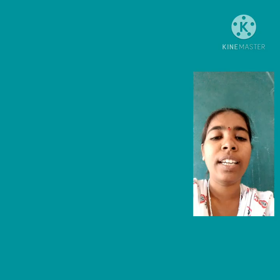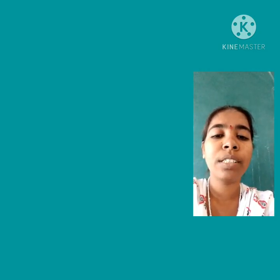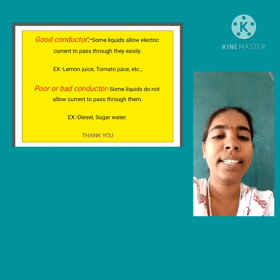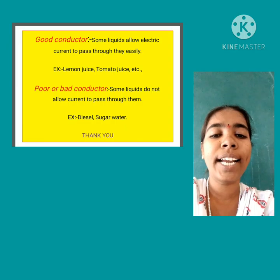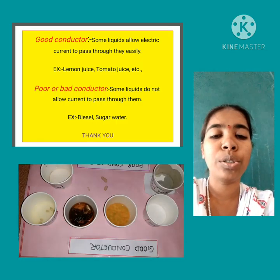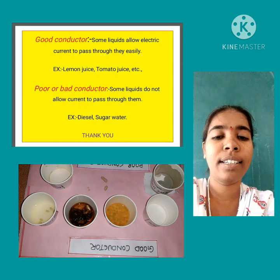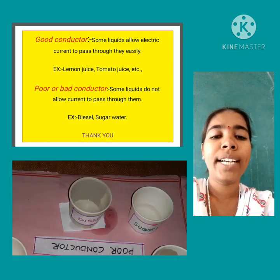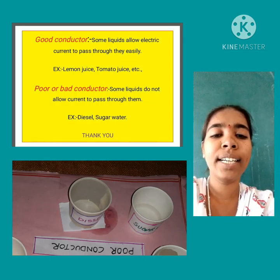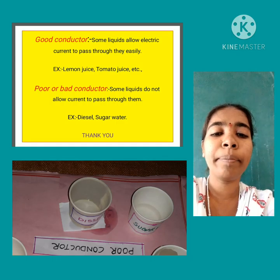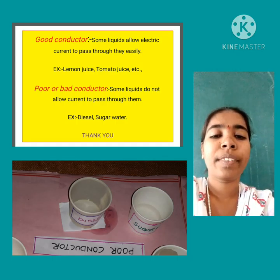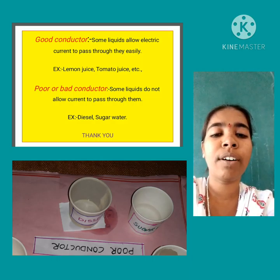From the above activity, we conclude that liquids are of two types: good conductors and bad conductors. Good conductors are liquids that allow electric current to pass through them easily — such as lemon juice, tomato juice, tamarind juice, sodium hydroxide solution, iodine solution, etc. Poor conductors or bad conductors are liquids that do not allow electric current to pass through them — such as diesel, sugar water, etc.